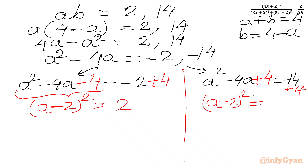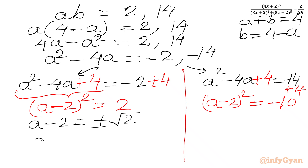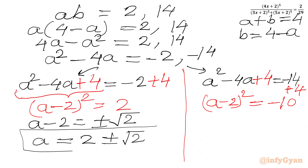Adding 4 to both sides to complete the square: for the first equation, (a minus 2)^2 equals 2, giving a minus 2 equals plus or minus square root 2, so a equals 2 plus or minus square root 2. These are two real values. For the second equation, (a minus 2)^2 equals minus 10, which is negative.